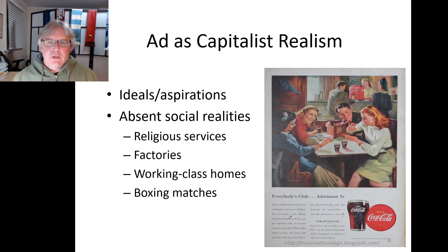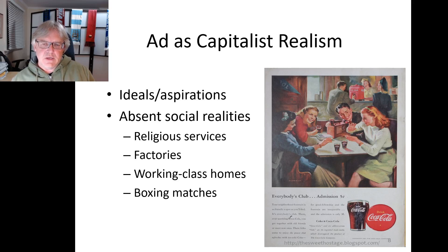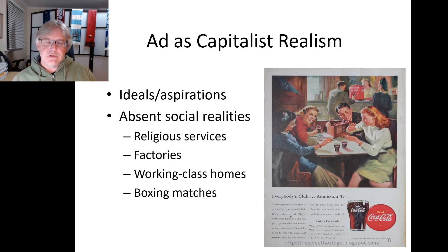Thinking about advertising as capitalist realism means examining how it depicts people and goods. Marchand looked at about 100,000 ads — primarily magazine ads from the 1920s and 30s — trying to figure out ways to thematically organize them and understand what advertising is primarily doing in an aggregate sense. He very early on came to realize that advertisements were largely about portraying people in an aspirational, idealized sense, not depicting the ordinary, everyday circumstances of people.